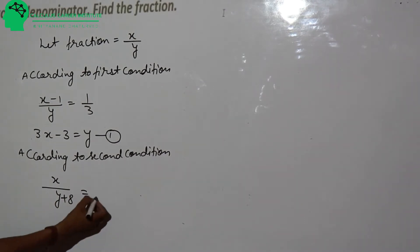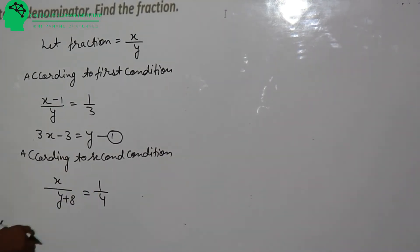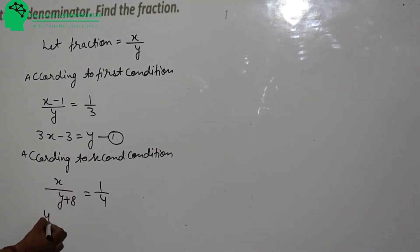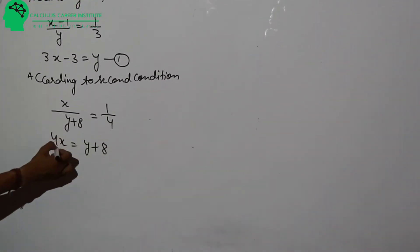In the denominator, 8 is added to the denominator. Then it becomes 1 by 4. We will cross multiply. How much do we get? 4x is equal to y plus 8.